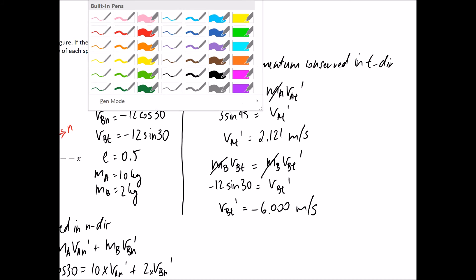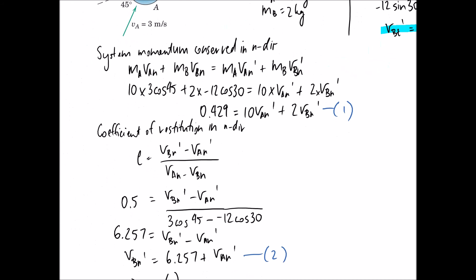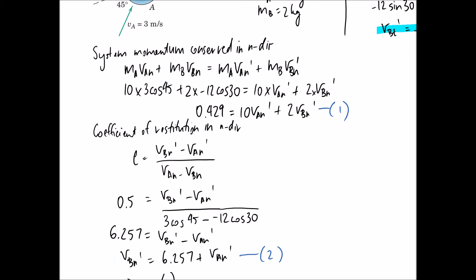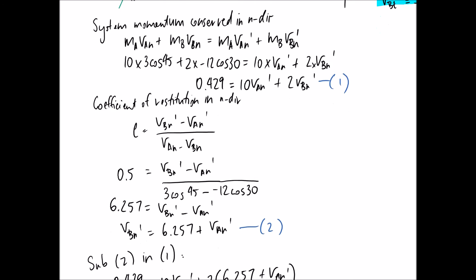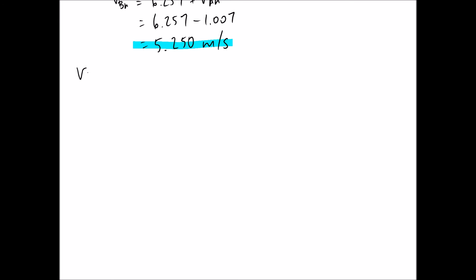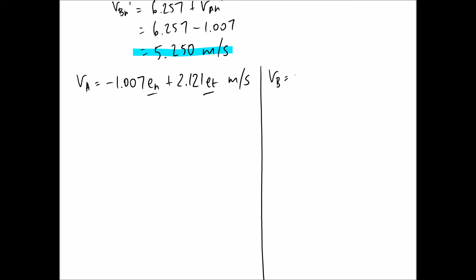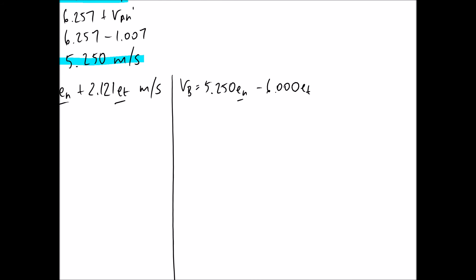Now we know the velocities of each ball immediately after the collision in the n and t directions. Writing them in vector form: velocity of A equals negative 1.007 e_n plus 2.121 e_t, and velocity of B equals 5.250 e_n minus 6.000 e_t, in metres per second. The remaining task is to convert these into x and y components.